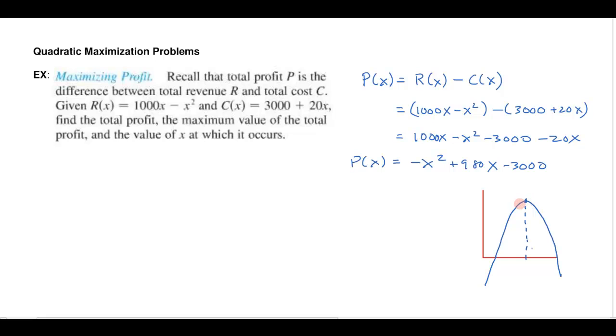Now, there's a couple ways that I can find that vertex. Actually, three ways that you may want to use. The first way you remember is you could complete the square. I could go ahead and complete the square on this. I could factor that negative out of the x term. So I'd have -(x² - 980x).